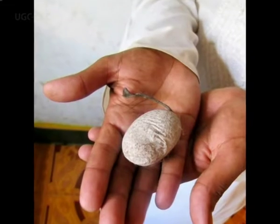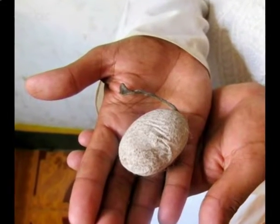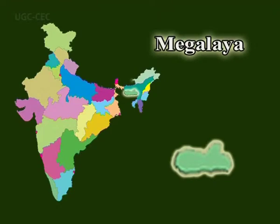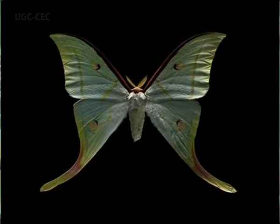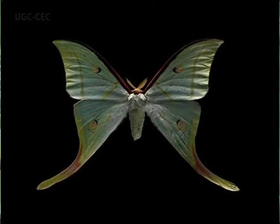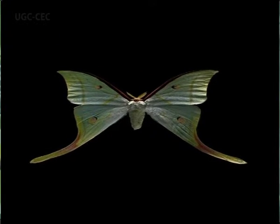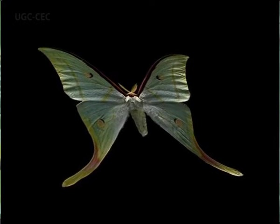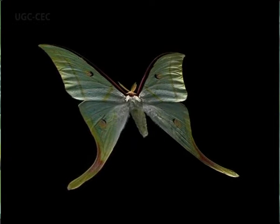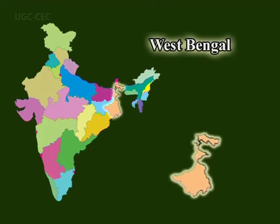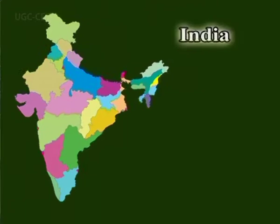The cocoons of this tusser silkworm were collected in different places of Meghalaya. This swallowtailed moth is a tri-voltine species reported from tropical moist deciduous forests, and reported to occur in Sikkim, Meghalaya, Assam, West Bengal, Maharashtra, and South India.